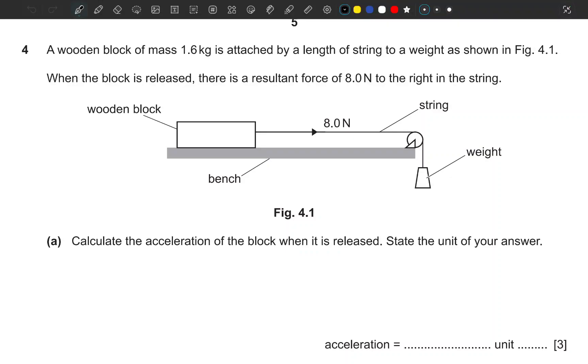Here is a question for us. The question says a wooden block of mass 1.6 kg is attached by a length of string to a weight as shown. When the block is released, there is a resultant force of 8 newtons to the right in the string. A wooden block here, a bench, a string, then this weight is pulling it down. Calculate the acceleration of the block when it is released and state the unit of your answer.